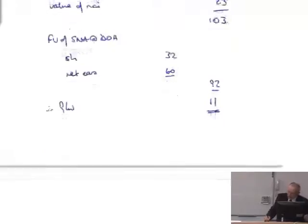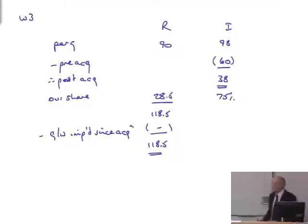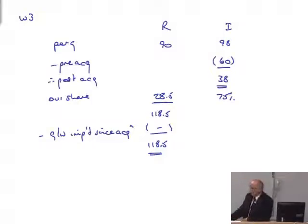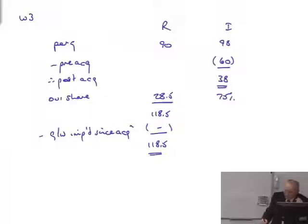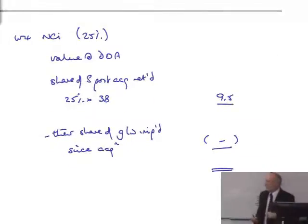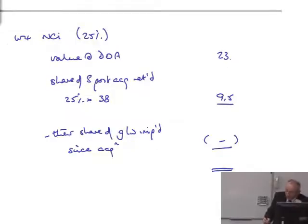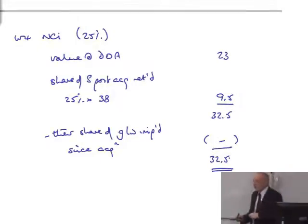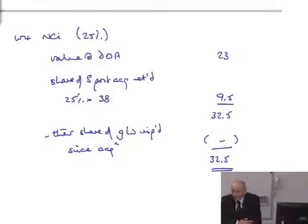Working 3: per the question, the pre-acquisition retained earnings, therefore post-acquisition is our share, less our share of goodwill impaired since acquisition - but there is none. Working 4: value at date of acquisition was 23. Since acquisition, they want their 25% of 38. No goodwill impairment at all, but even if there had been, none would have gone against them, because they're proportionately valued.